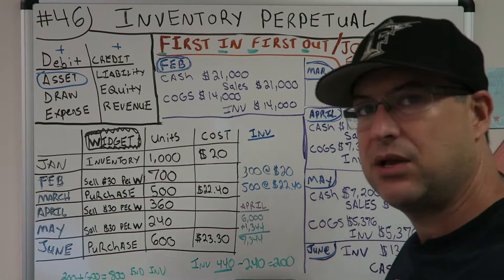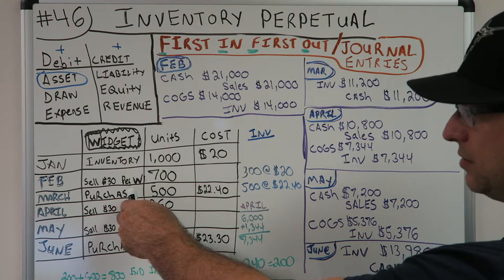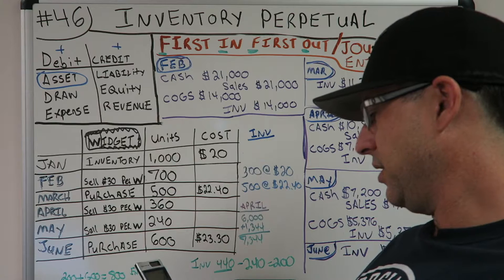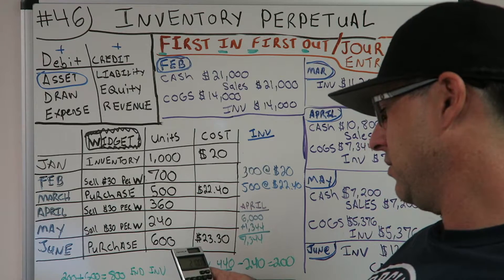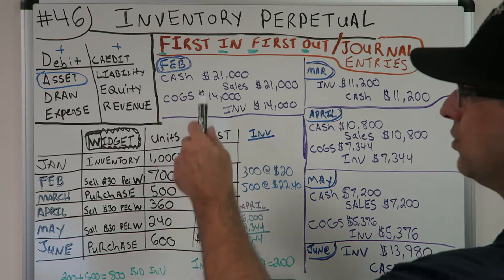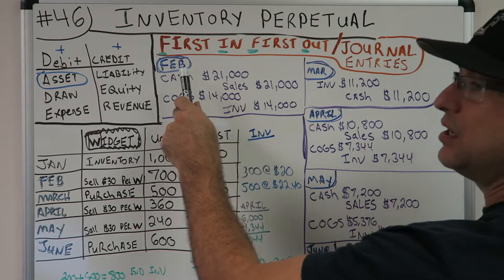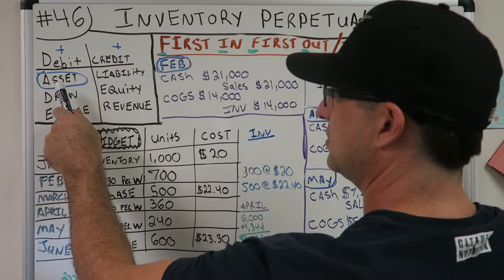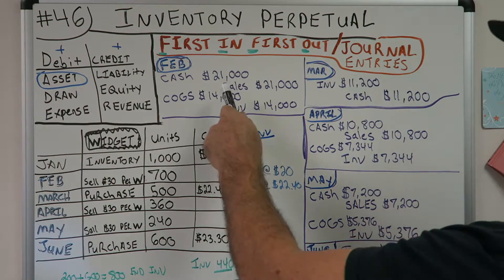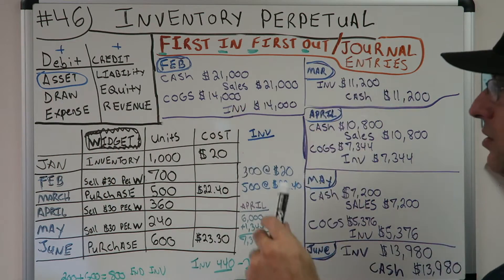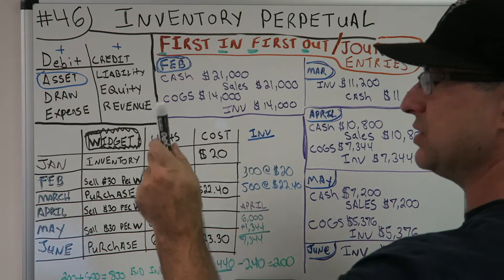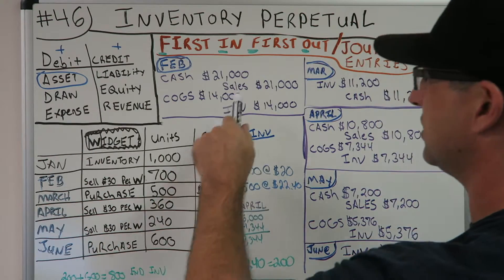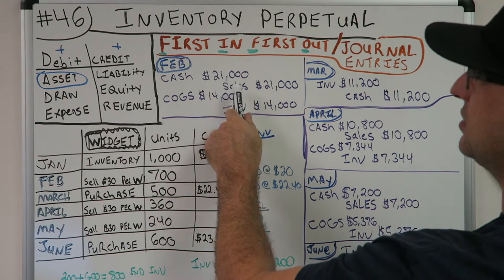If I'm selling, I'm getting money. How much am I getting? 30 times 700 equals $21,000. I'm getting $21,000 cash — that's our debit, because cash is an asset going up. What's our credit? We sold a widget, that's what we do for our business, so the credit is Sales or Revenue — $21,000.